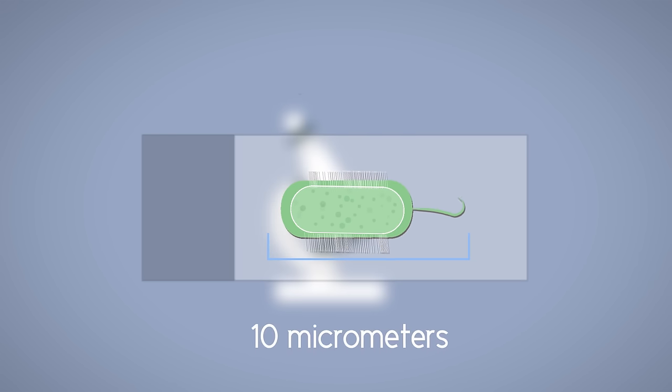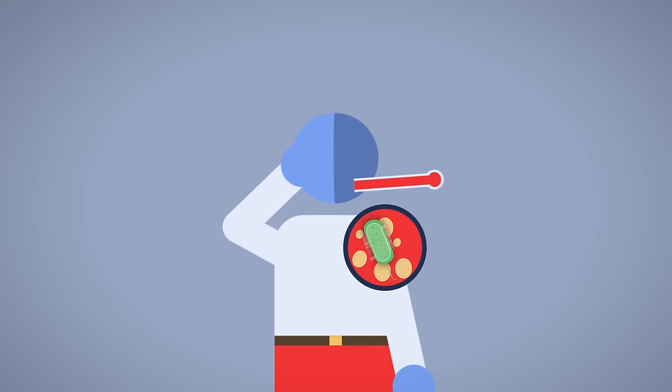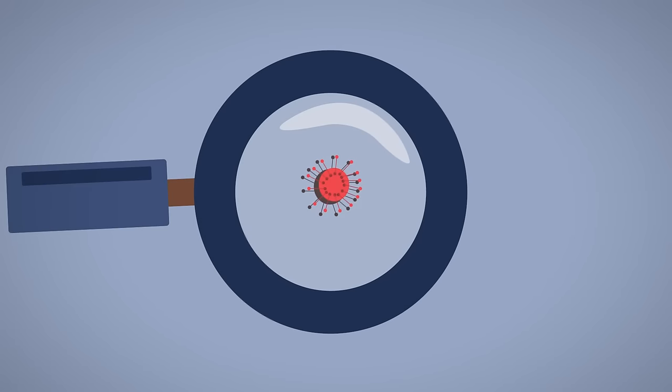Bacteria are microscopic—even the biggest are only 10 micrometers long, which is minuscule. Once bacteria find their way into the body, they release toxins that make us feel ill. Examples of bacterial infections are cholera, typhoid, food poisoning, and gonorrhea.